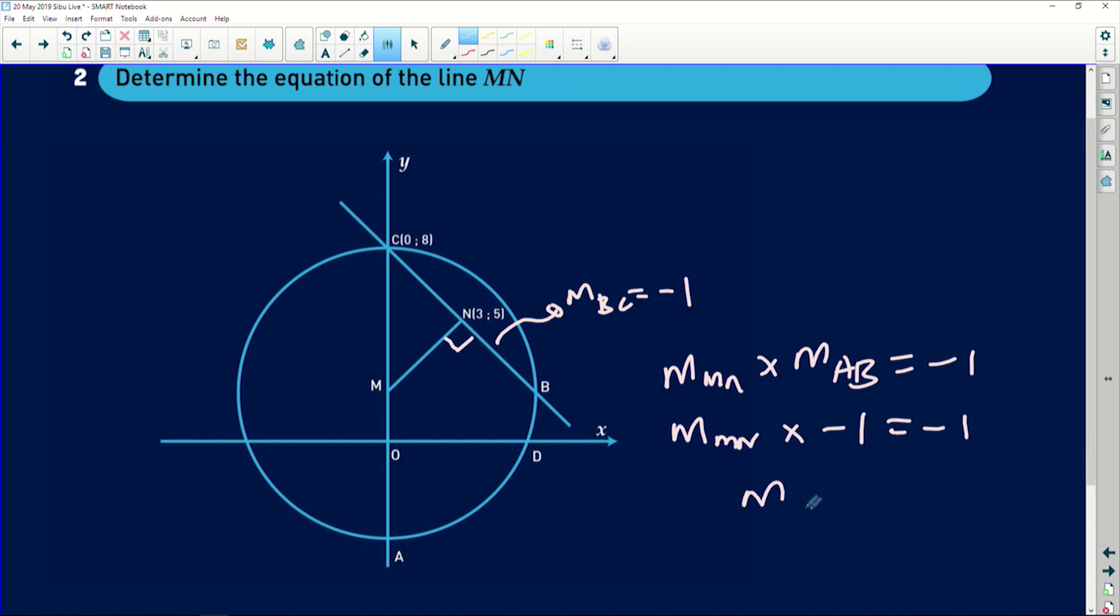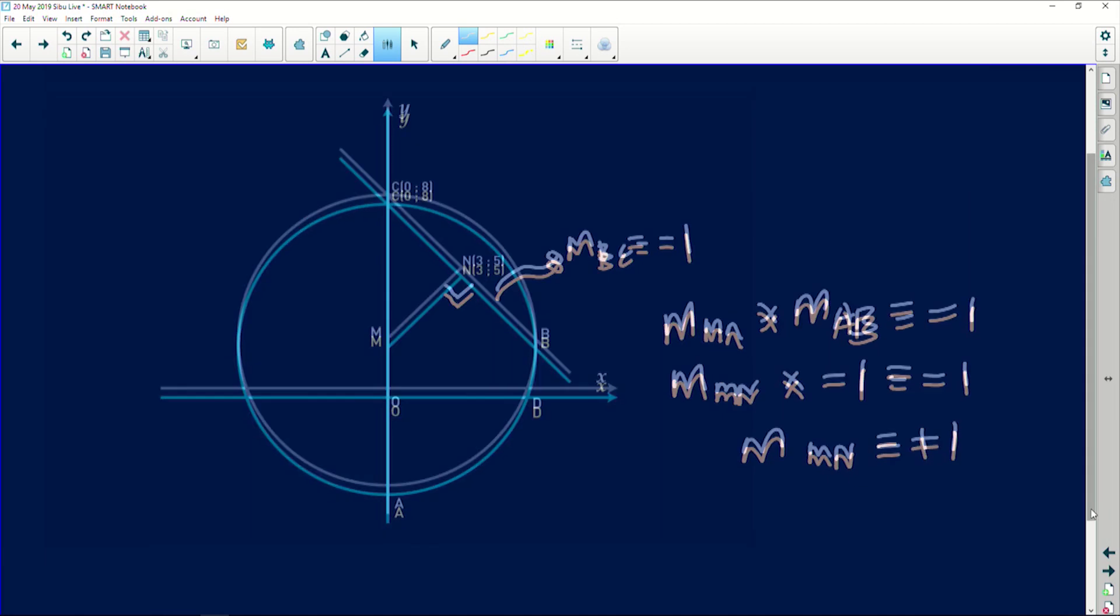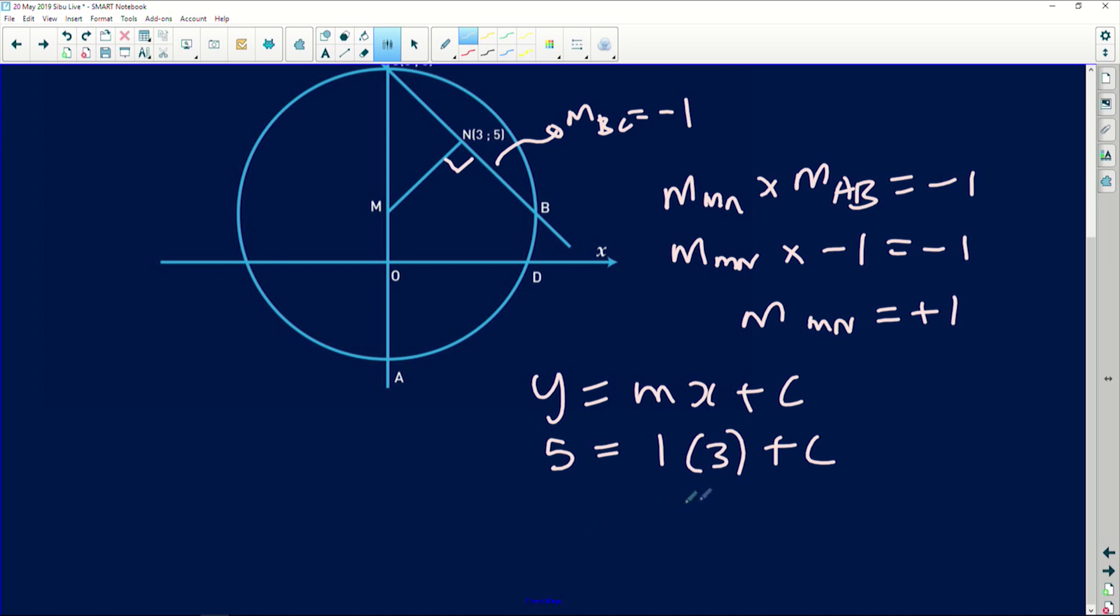Now y equals mx plus c. The y value I'm going to use here is 5, the gradient is 1, the x value is 3, plus c. This is going to be 5 equals 3 plus c, so c equals 2. Therefore the equation is y equals x plus 2.